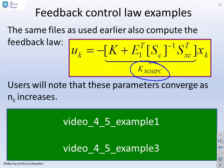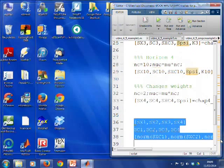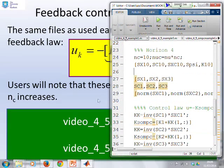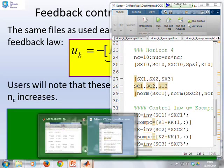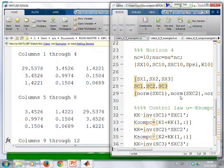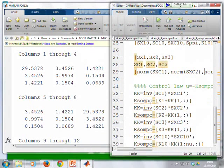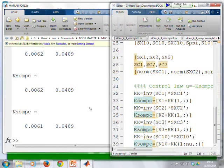So here's our new feedback law. I've called it K subscript SOMPC, the S standing for suboptimal model predictive control. So again, what we'll do is we'll just go to these same two MATLAB files and calculate this K matrix and have a look what it seems to be.